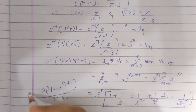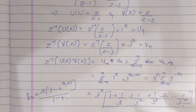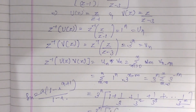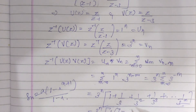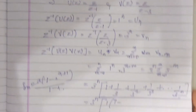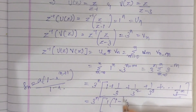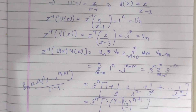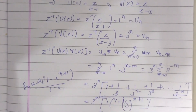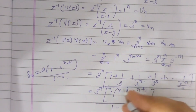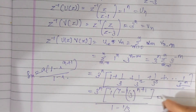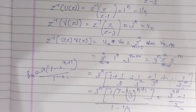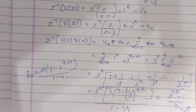Using the finite GP formula with a=1 and r=1/3: we get 3ⁿ · [1·(1−(1/3)^(n+1)) / (1−1/3)]. On further evaluation, we get the final answer: (3^(n+1) − 1) / 2.